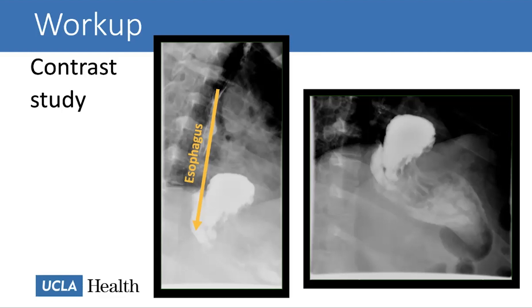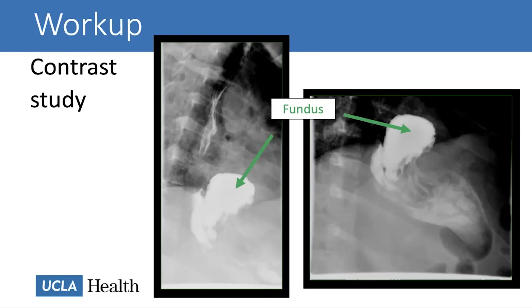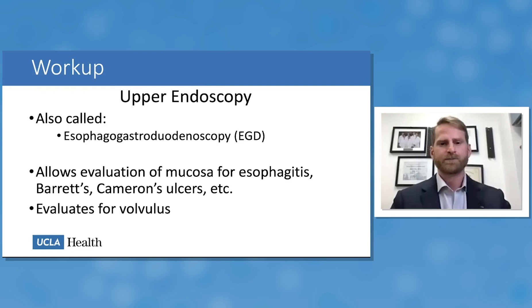On a sample barium swallow, the esophagus appears as a vertical white band running down the image. Below the diaphragm is the stomach with contrast. There is a pinch at the proximal stomach where the diaphragm meets the hiatus, and then a large white area representing the herniated fundus. This barium swallow clearly shows a paraesophageal hernia — the esophagus reverses almost all the way down to the diaphragm, suggesting an essentially true type two or paraesophageal hiatal hernia.